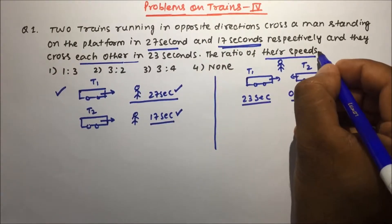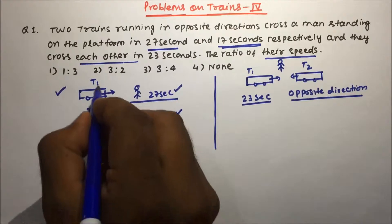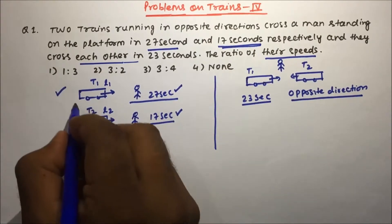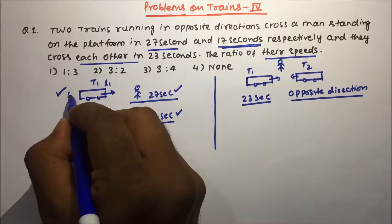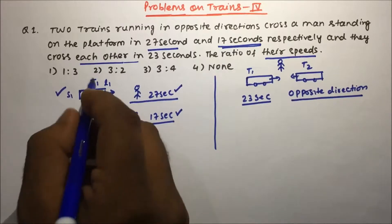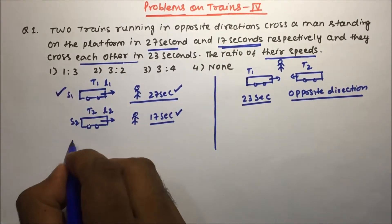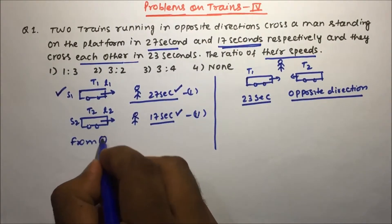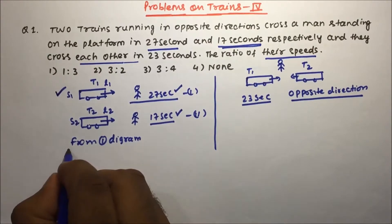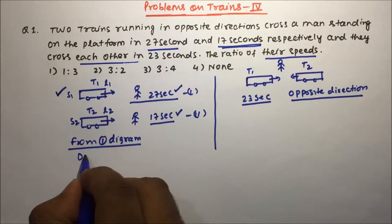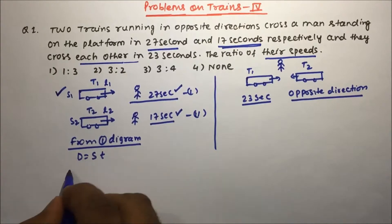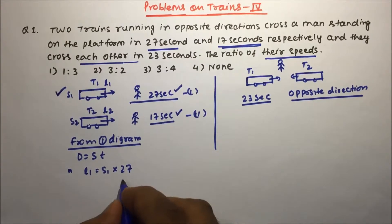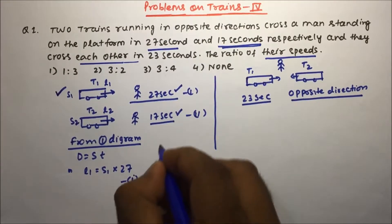They are asking for the ratio of their speeds. Suppose the length of Train 1 is L1 and the length of Train 2 is L2, and the speeds are S1 and S2 respectively. From the first diagram, using D = S×T, we get L1 = S1 × 27. This is equation 1.